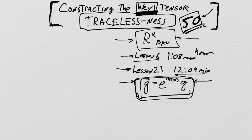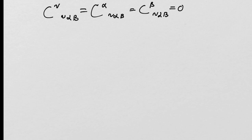Okay, so let's begin. What does tracelessness mean? Well, it means that all contractions are going to be zero. So the contraction on the first index, the contraction on the second index, and the contraction on the third index all will equal zero. That is the tracelessness requirement for the Weyl tensor.